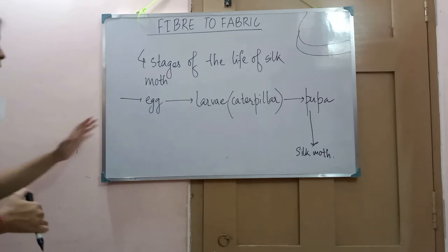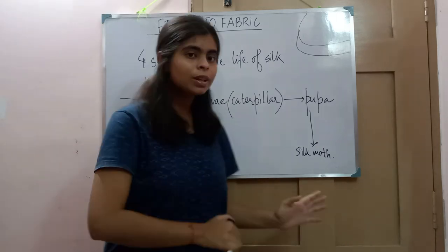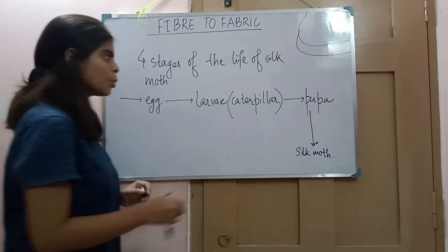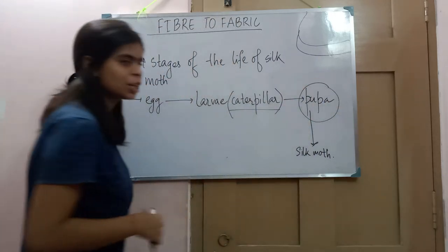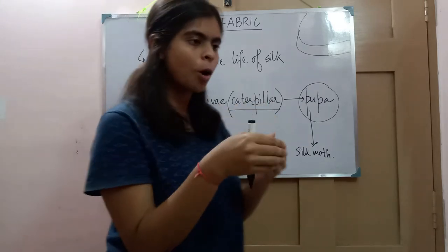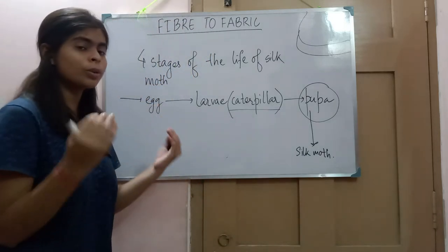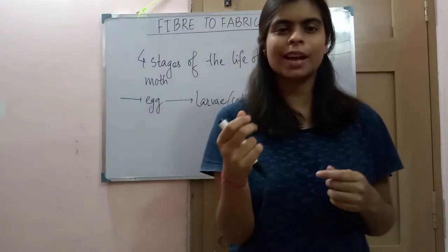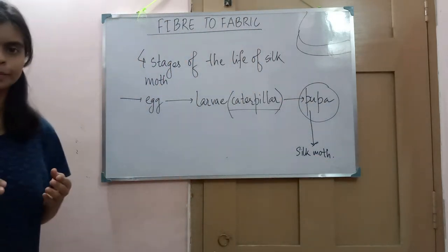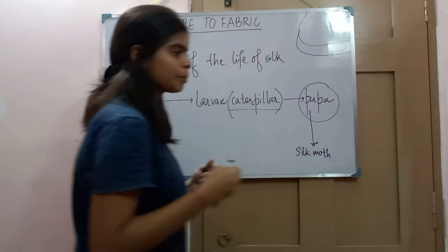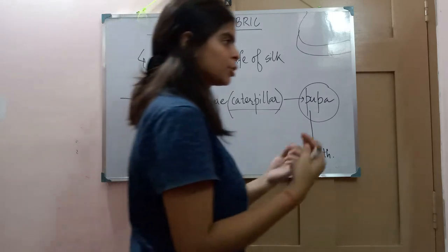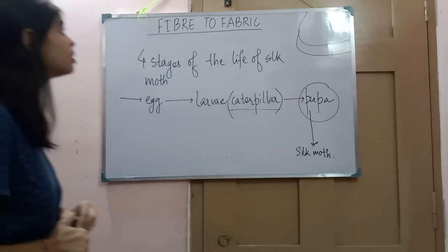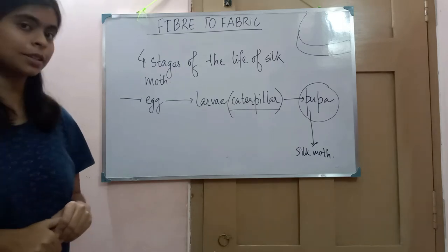Today we will discuss how we get silk from a cocoon. When the caterpillar moves to the pupa stage, this pupa stage occurs inside the cocoon. The cocoon is built by a secretion — the caterpillar secretes a fiber which is a kind of protein, and upon exposure to air it hardens. In this way they develop a shell, which is the cocoon.